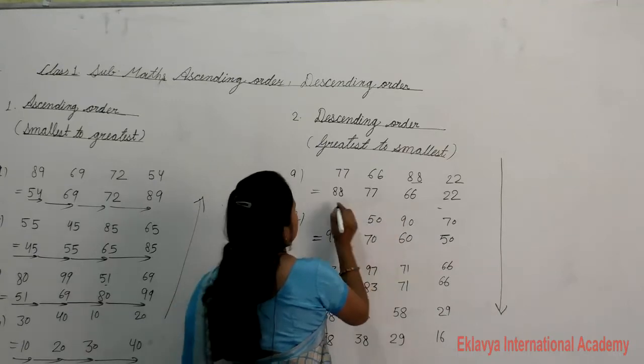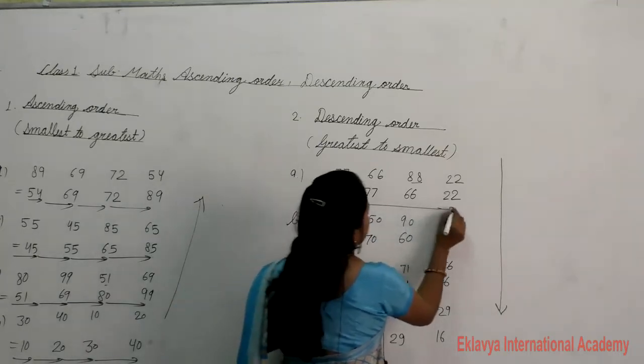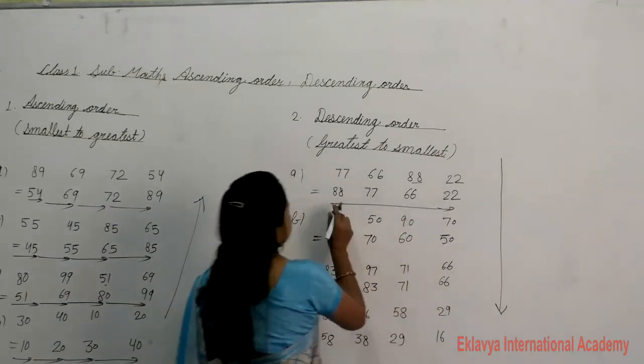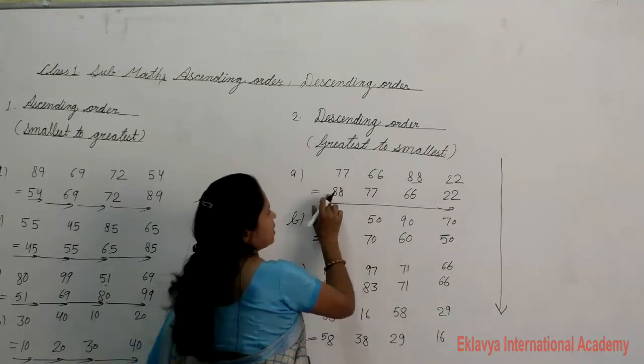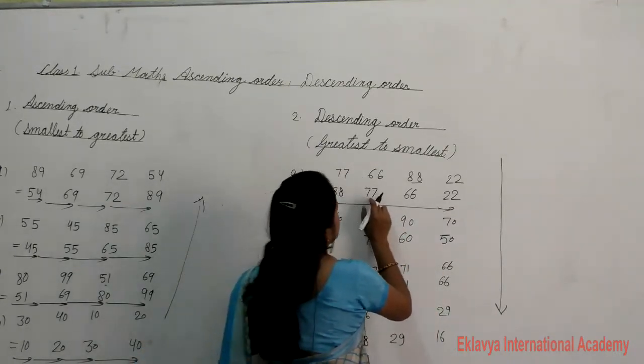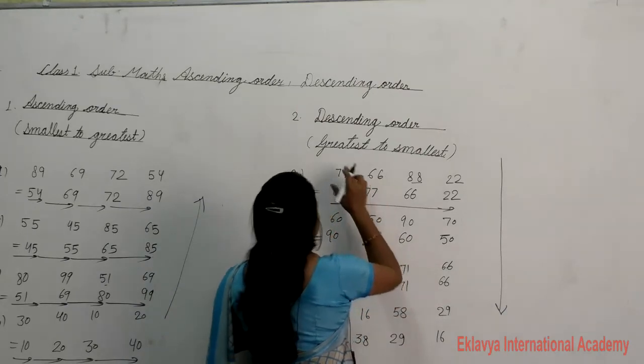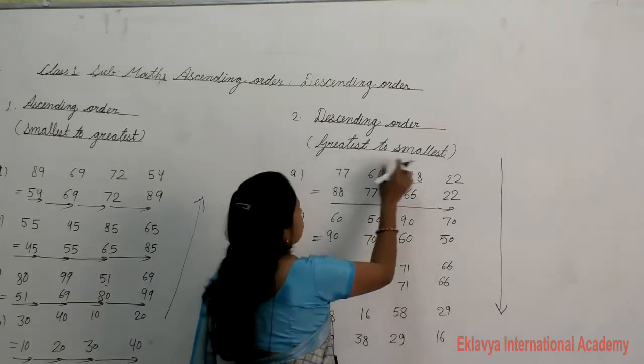Understand this — 88 is big, and we go greatest to smallest.